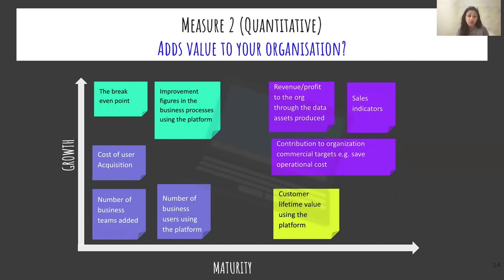In maturity, you focus on how much cost a customer has produced in their lifetime using the platform. As you move up, you can start measuring commercial figures like profit made to the organization, sales indicators such as number of bookings, products sold, and so on. Finally, a big measure is how much contribution the platform has made to the organization's commercial targets — like saving operational costs. This is a really important one.